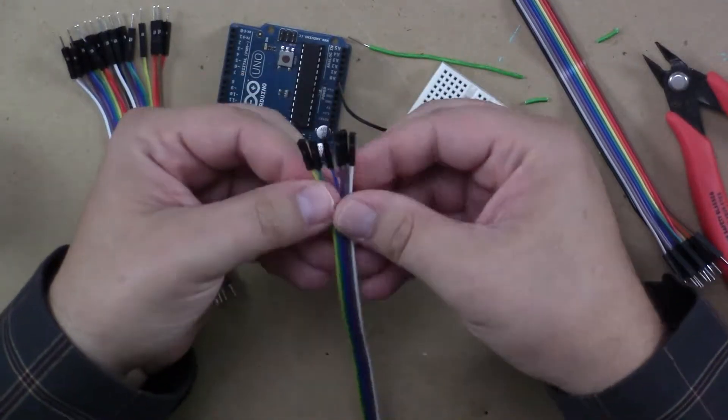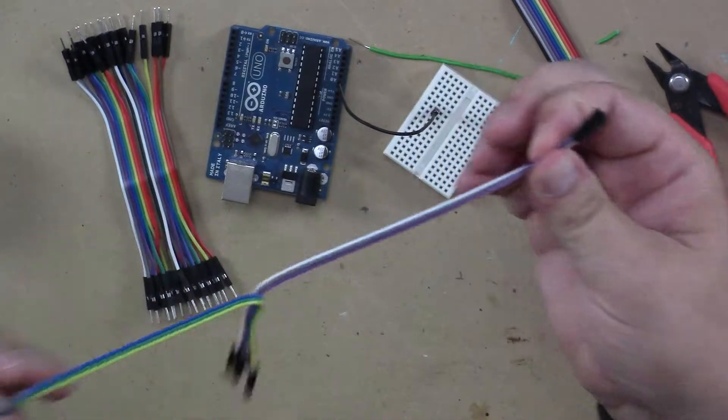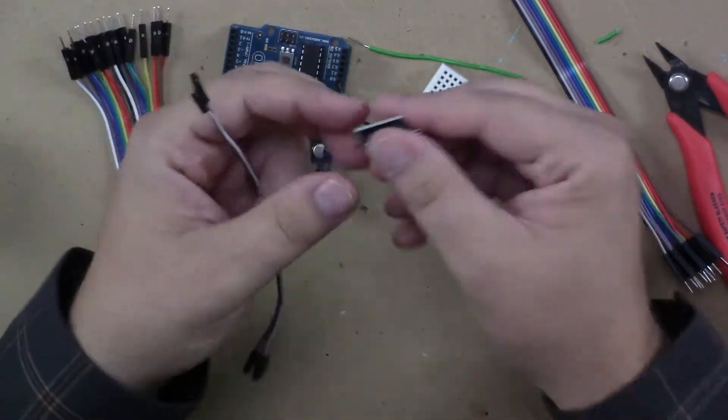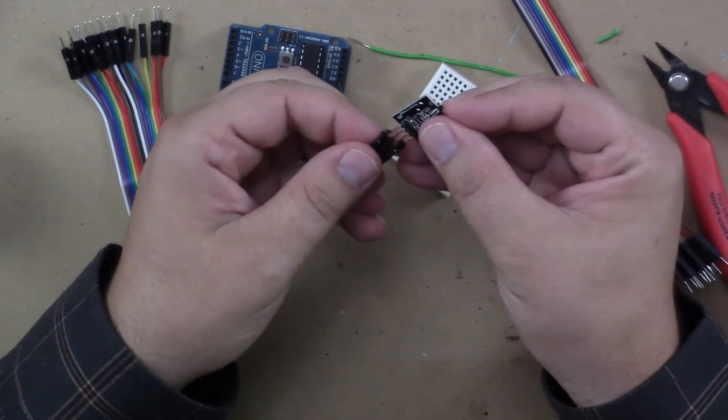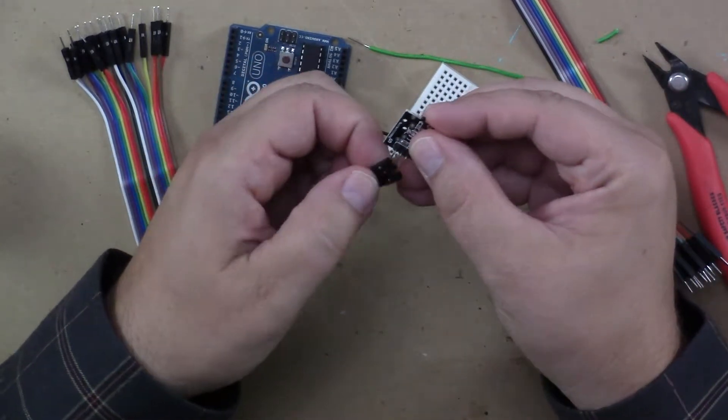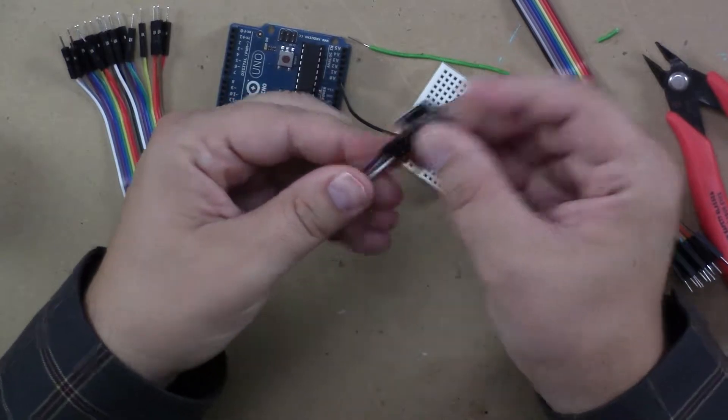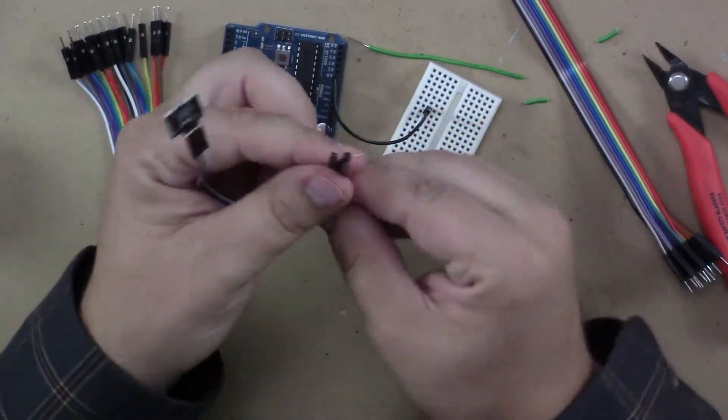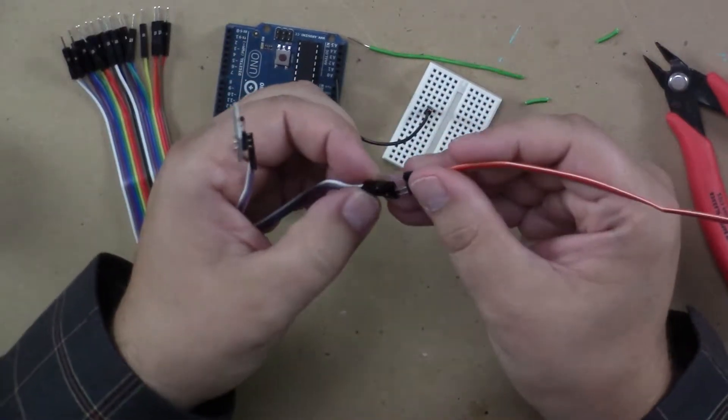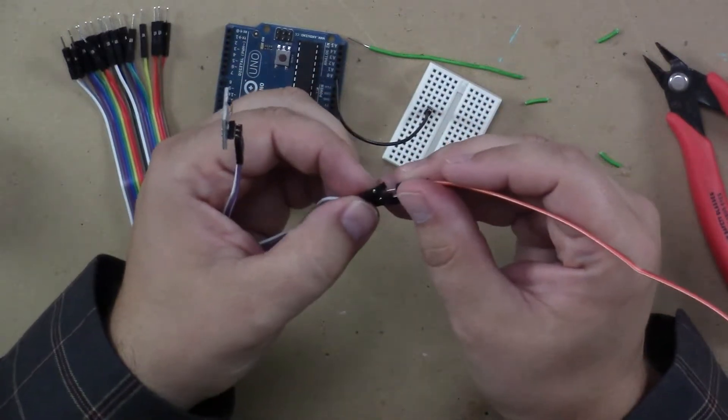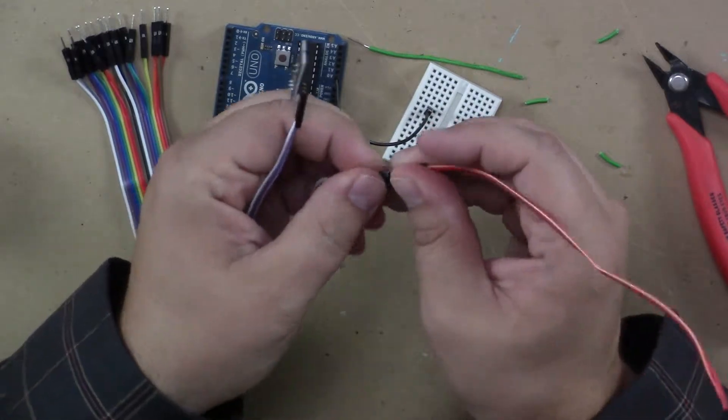If I were to take a female-to-female jumper wire set here, and here's a little temperature breakout board, I can actually attach the pins that have already been soldered onto this breakout board to the female ends. And then on this end, I could very easily pull off three male-to-male, plug them into here.